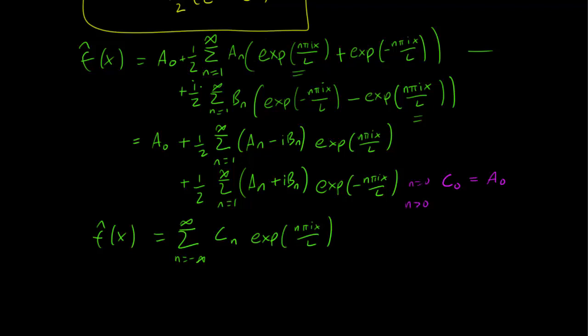Now the n positive case. We have Cₙ that corresponds to the positive exponentials, but then our constant is (aₙ - ibₙ)/2 for all the positive exponentials. And now let's look at n negative, so C₋ₙ. These are the negative exponentials, and we can see that the corresponding constants are (aₙ + ibₙ)/2. So we know exactly what the constants Cₙ are in terms of the a and b.